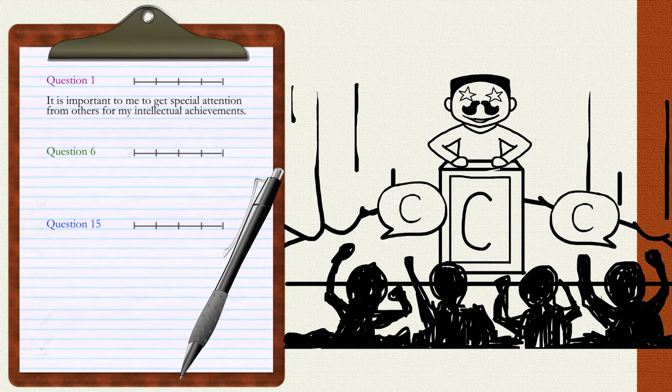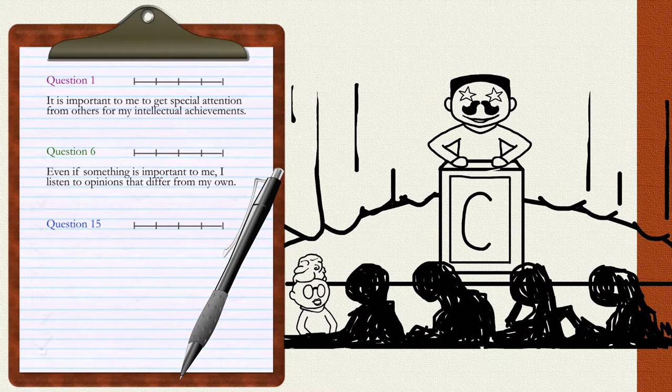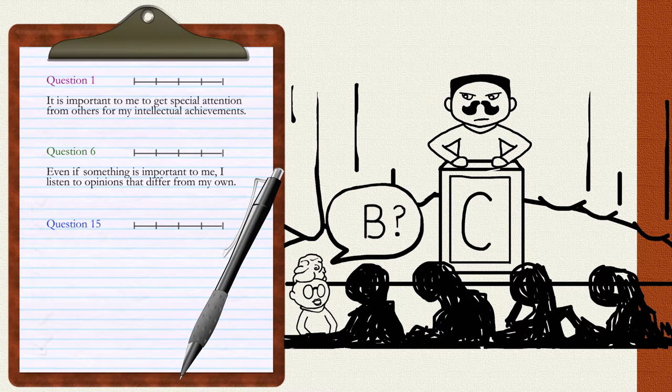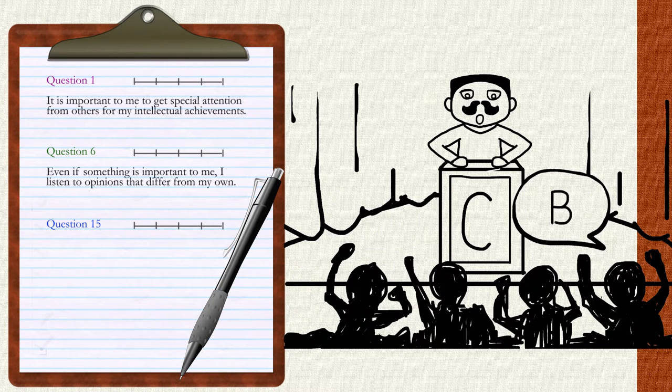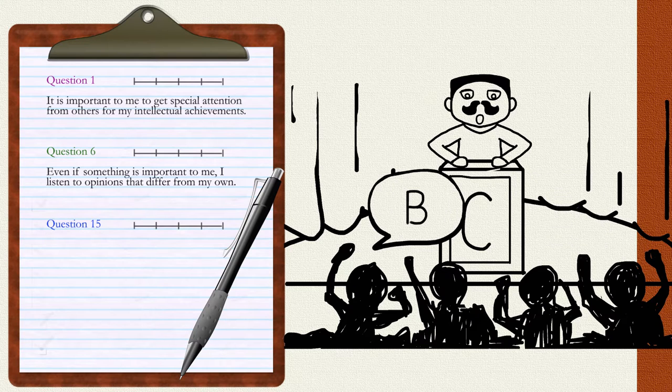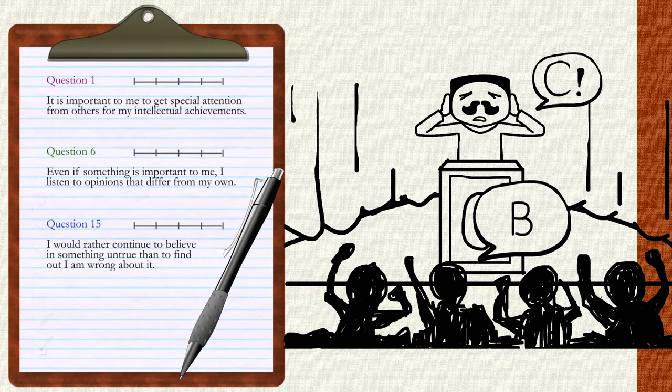For the second factor, which is the perspective taking factor: Even if something is important to me, I listen to opinions that differ from my own. And the third factor, which is the intellectual defensiveness factor, this is a reverse scored item: I would rather continue to believe in something untrue than to find out I am wrong about it.